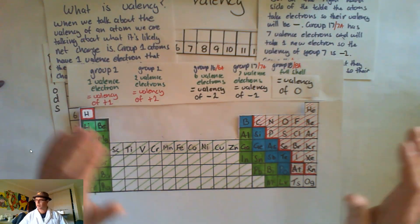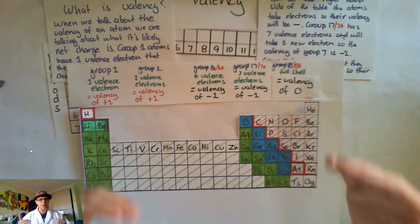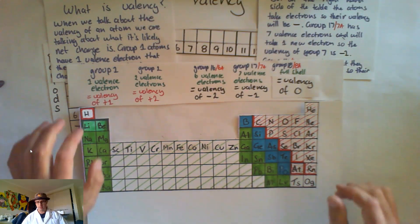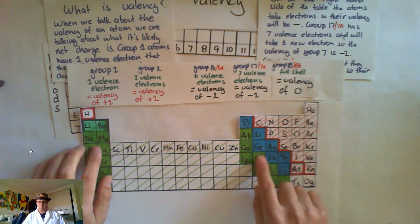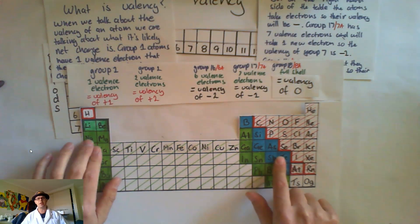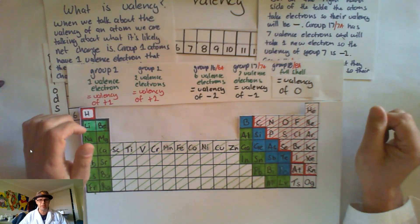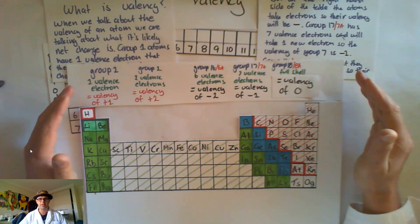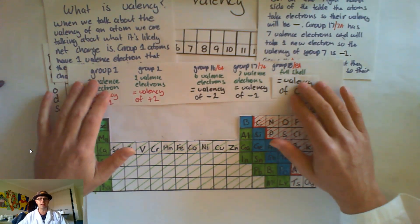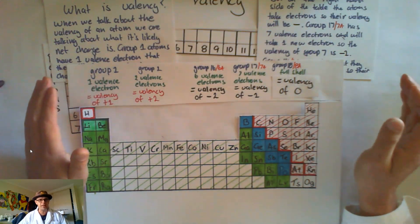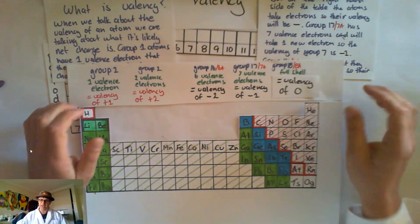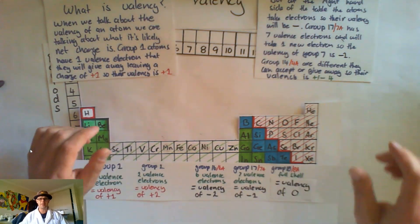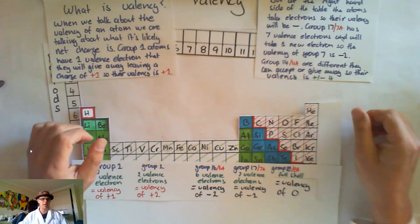So just quickly going over things — what did we look at today? We looked at our three types of atoms: non-metals, metals, and metalloids. We looked at groups and periods and why an atom is in a group or a period. And we looked at valency — your valency is what we class as the net charge. That's it for now. Hope to see you in the next video. Thanks a lot, bye.